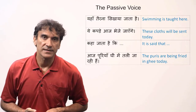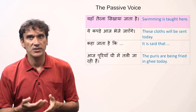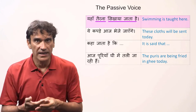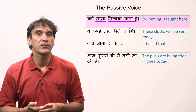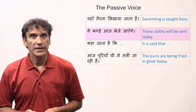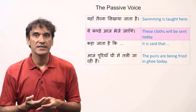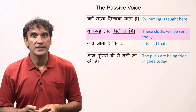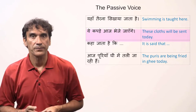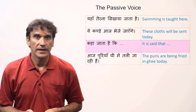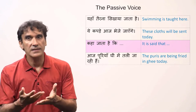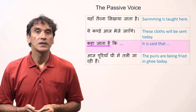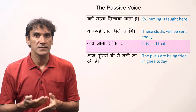Let's take a few more example sentences. 'Yahaan terna sikhaya jata hai' — swimming is taught here. The noun 'terna' is masculine, so the masculine form of the participle 'sikhaya' is used and 'jana' also takes the masculine form 'jata hai.' 'Ye kapde aaj bheje jayenge' — these clothes will be sent today. 'Ye kapde' is masculine plural, so the participle is also masculine plural 'bheje,' and the tense is future, so 'jayenge.' 'Kaha jata hai ki' means it is said that — this sentence has no subject, and Hindi uses masculine singular for the neutral subject.